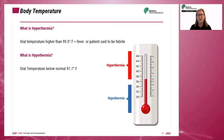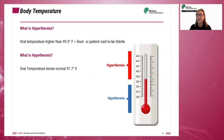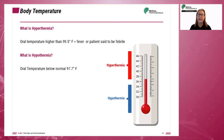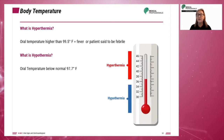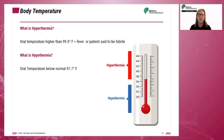However, cellular function is optimal only within a narrow temperature range. Therefore, prolonged hypothermia can lead to serious complications and cellular damage. Patients suffering from prolonged hypothermia may become confused, dizzy, and comatose.